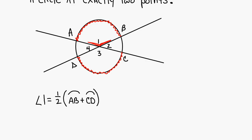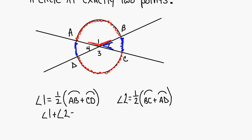If you know angle one you know angle three because they're congruent to each other. Angle two is equal to one half times arc BC plus arc AD. So this blue angle is equal to one half times this blue arc plus this blue arc. Angles one and two are a linear pair, so angle one plus angle two equals 180. So does angle two plus angle three, and three plus four — you have three linear pairs there.